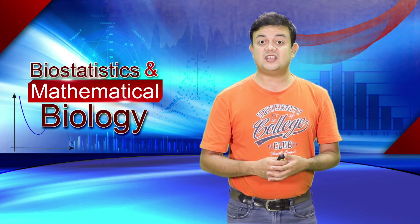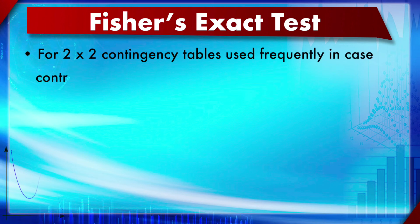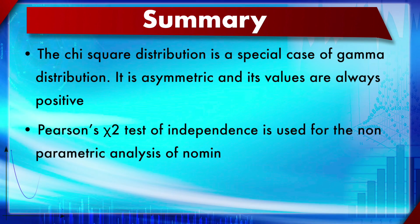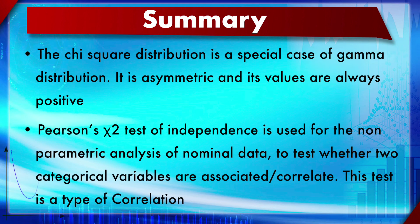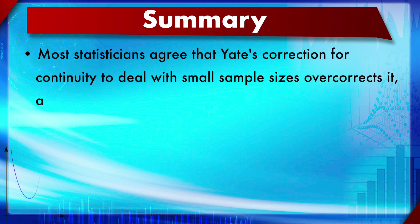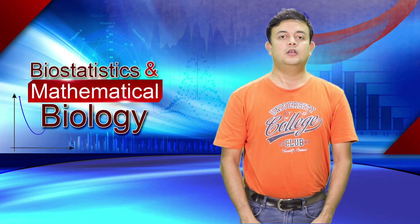Another test is Fisher's exact test for 2×2 contingency tables, often used in case-control studies and considered the best test for that situation. This will be explained in module 20. In summary: the chi-square distribution is a special case of the gamma distribution with values always positive. Pearson's chi-square test of independence is used for non-parametric analysis of nominal data to test whether two categorical variables are associated. Yates' correction for continuity is generally not recommended as most statisticians agree it over-corrects.